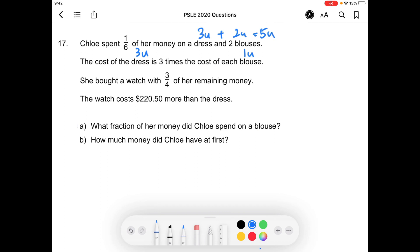Part A of the question: what fraction of her money did Chloe spend on a blouse? The blouse costs her one unit and given that she spent one sixth of her money on five units, to find out how much she spent on the blouse, which is one unit, we just simply take one over six divided by five and you will get one over thirty as your answer for part A. So, Chloe spent one over thirty of her money on the blouse.